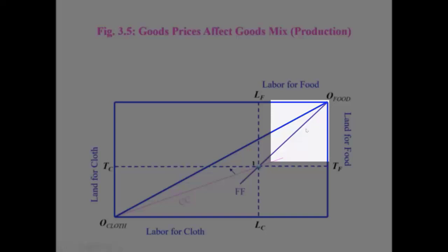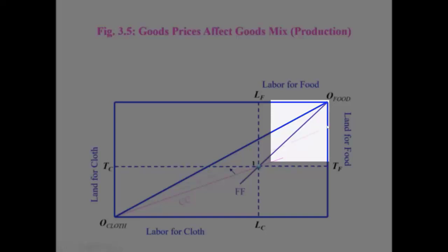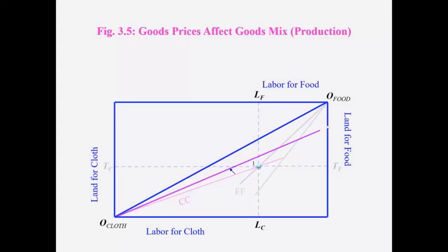So if we know that the land by labor ratio increases in both the sectors, and as a result, the equilibrium point for the home country is now at this gray point.